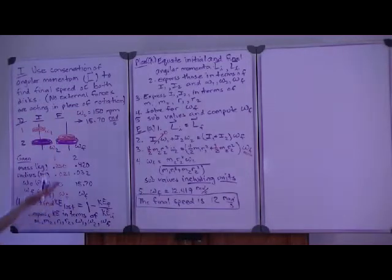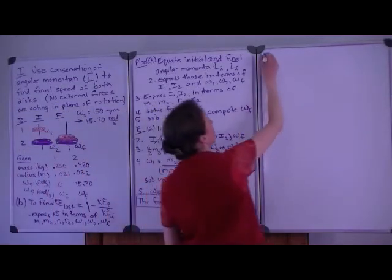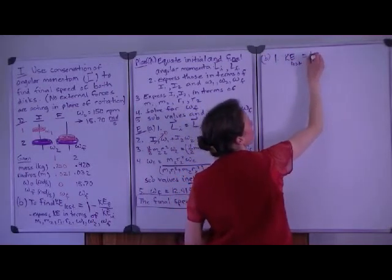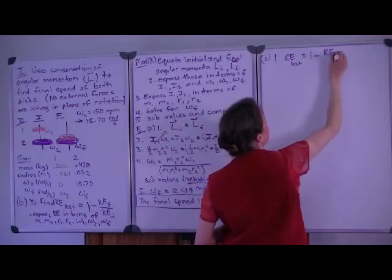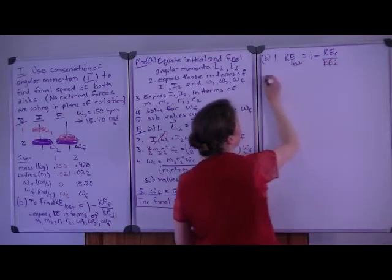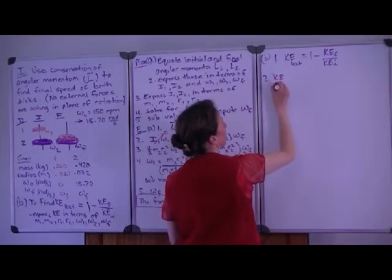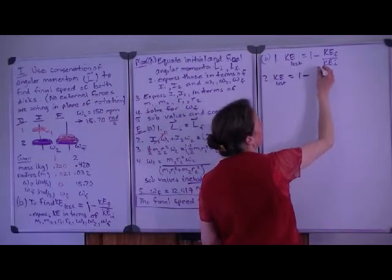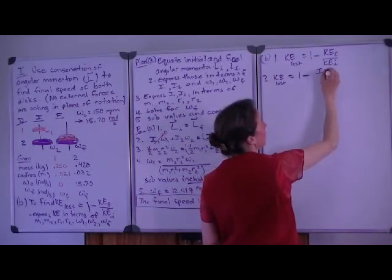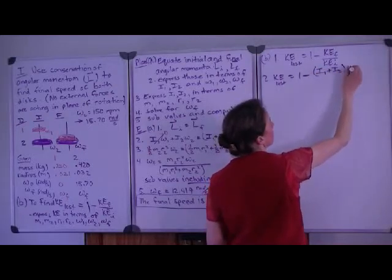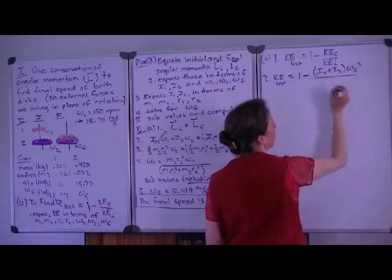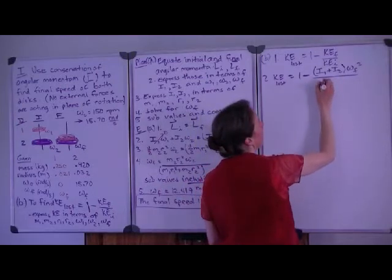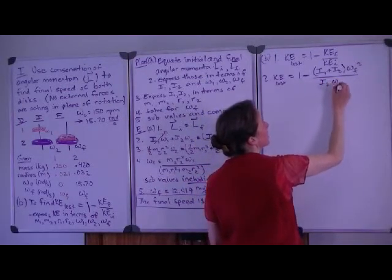Now we can evaluate part two of the problem to find the kinetic energy lost. And so the kinetic energy lost can be expressed as one minus the fraction of kinetic energy we have left. The kinetic energy is the angular velocity of the final. So that's I1 plus I2 times the final velocity squared divided by the initial kinetic energy which, as you recall, only came from disk two. And so we have the moment of inertia for disk two times its initial speed squared.